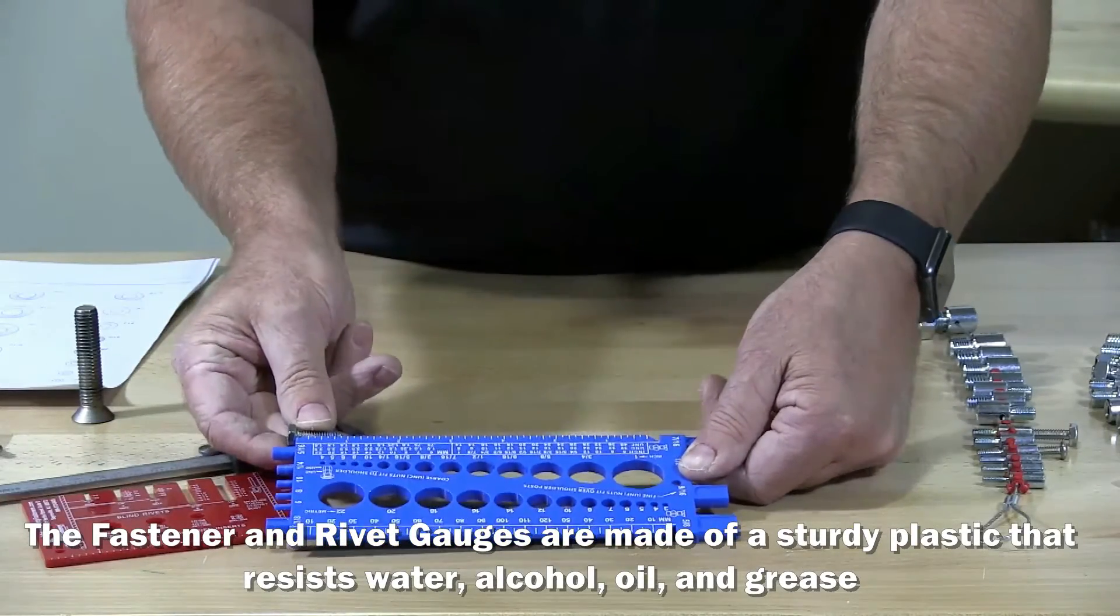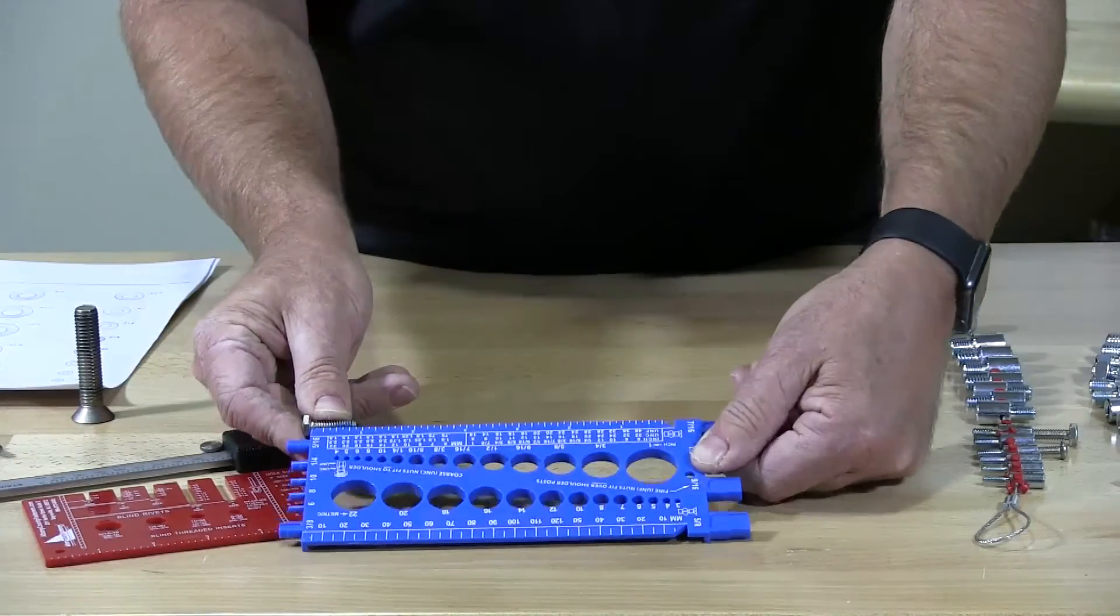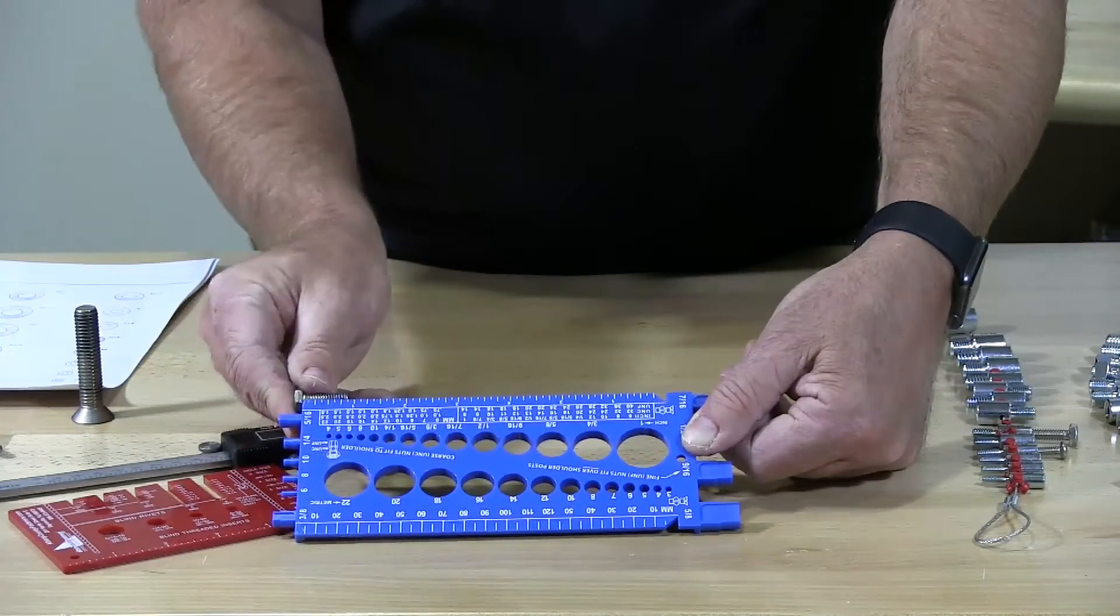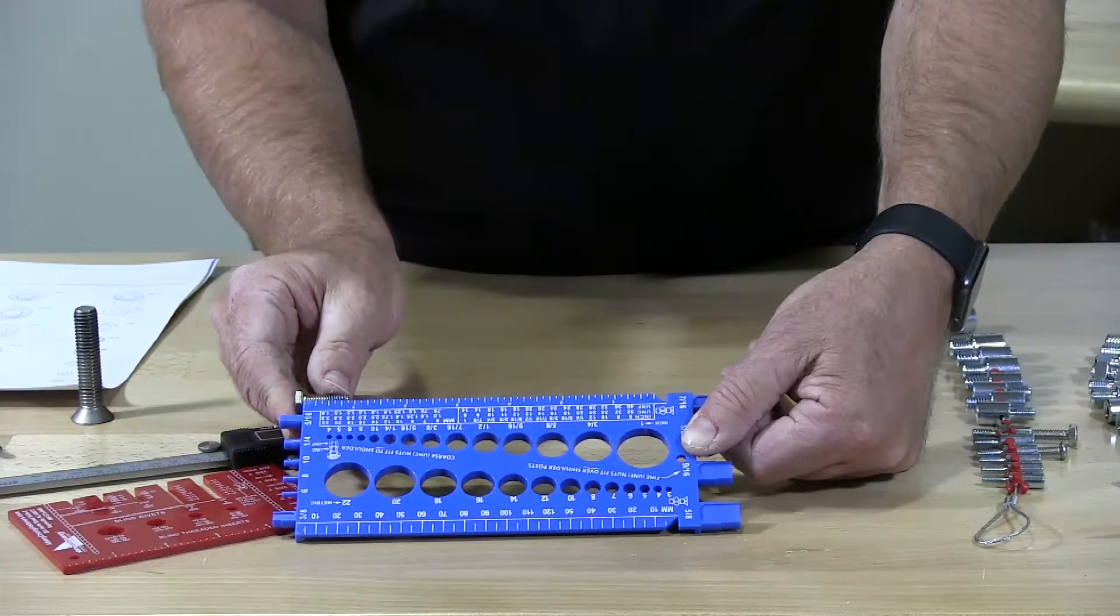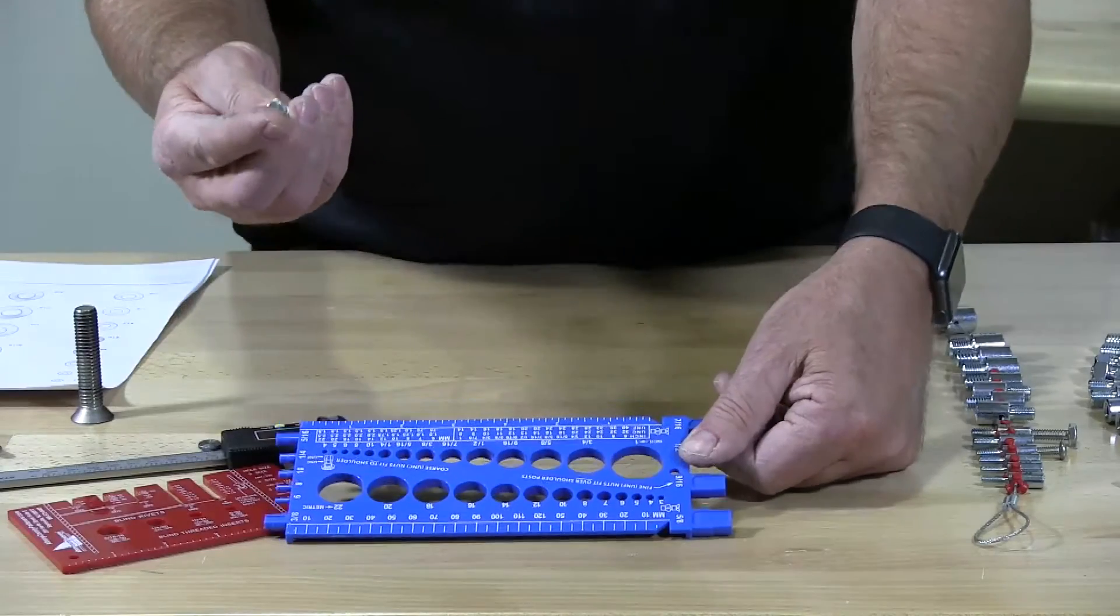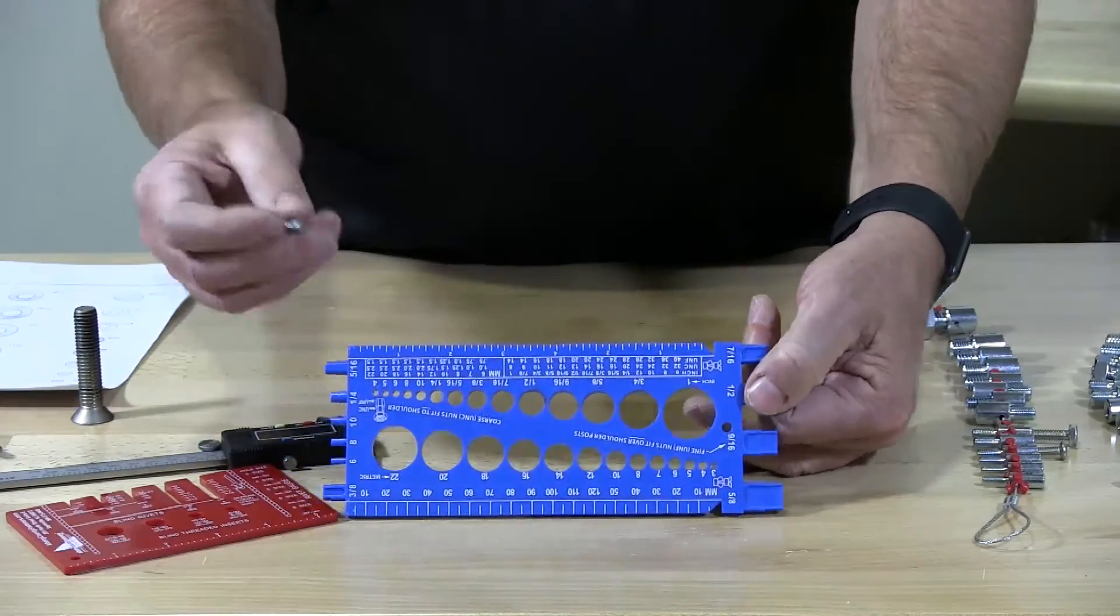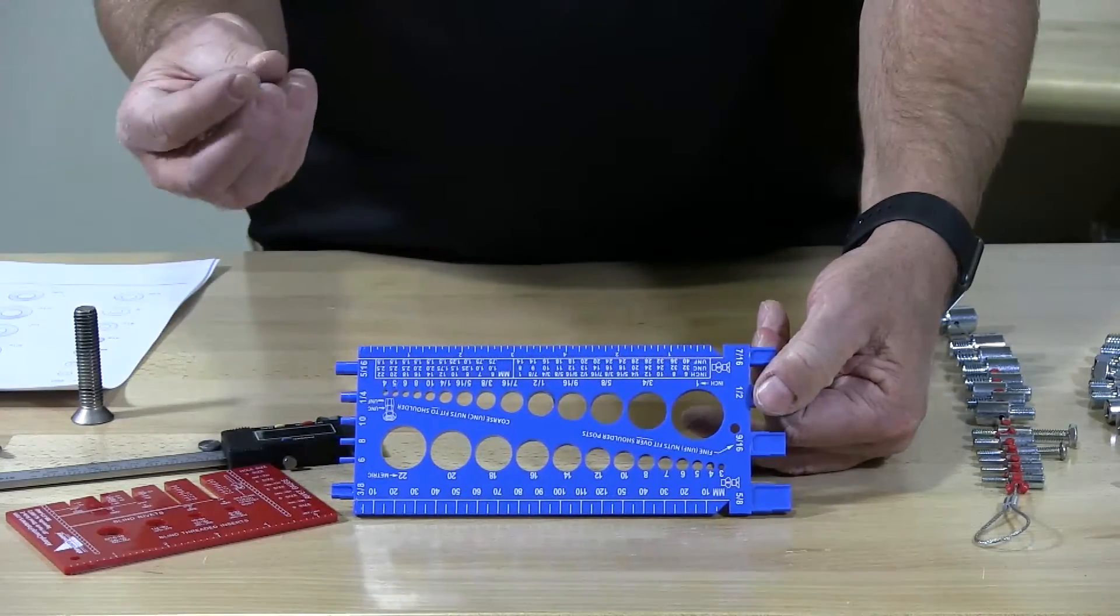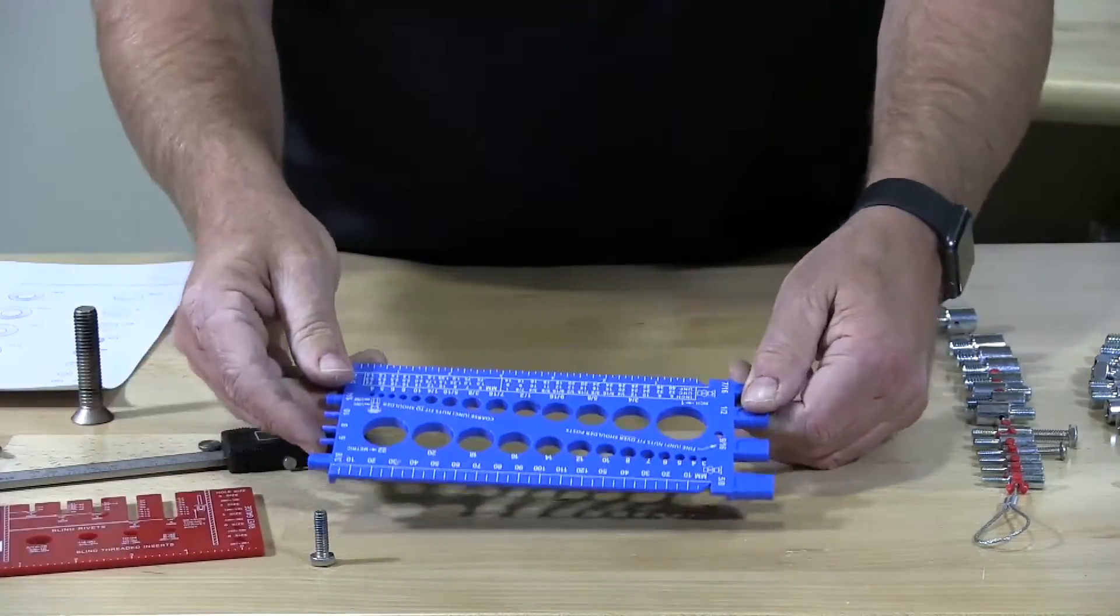So in this situation we would see that this is seven eighths of an inch when all said and done. This is one inch and it's one eighth less so we have seven eighths of an inch. So we know it's quarter inch by seven eighths. But we don't know. This gauge will not tell you what the thread is. Is it fine thread? Is it coarse thread? This gauge is not able to tell you that.